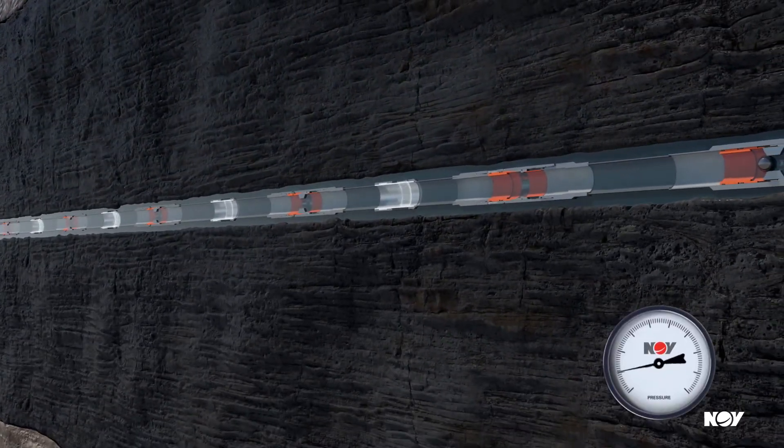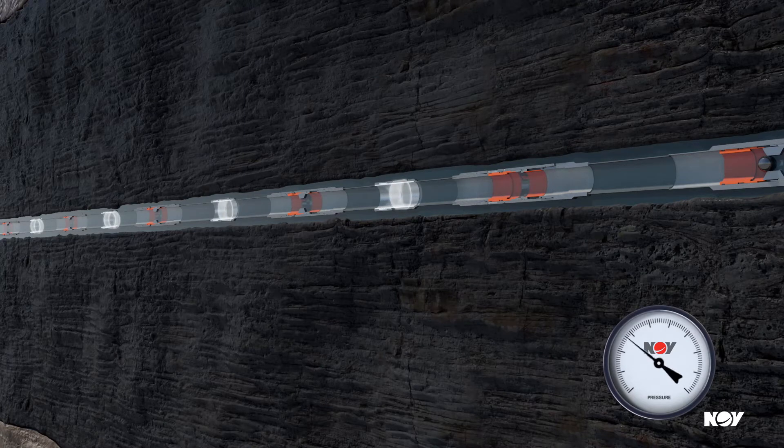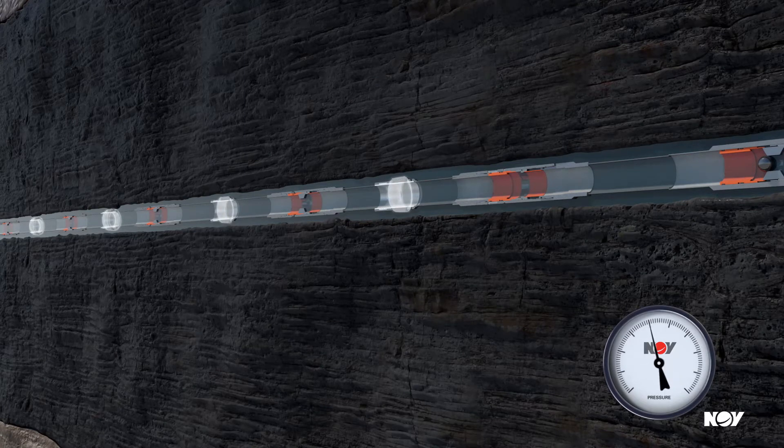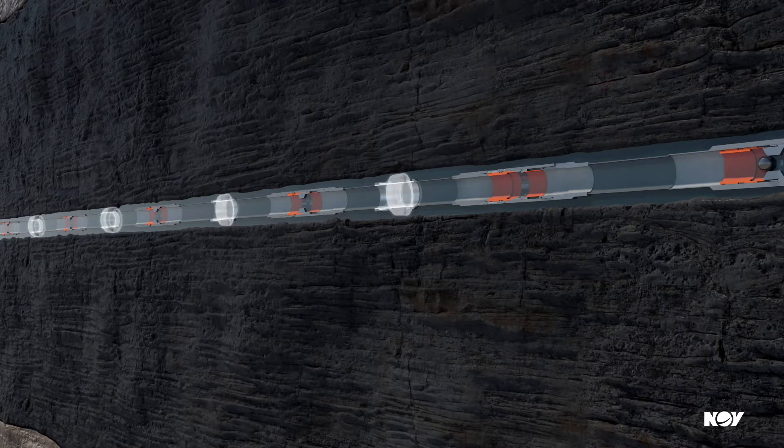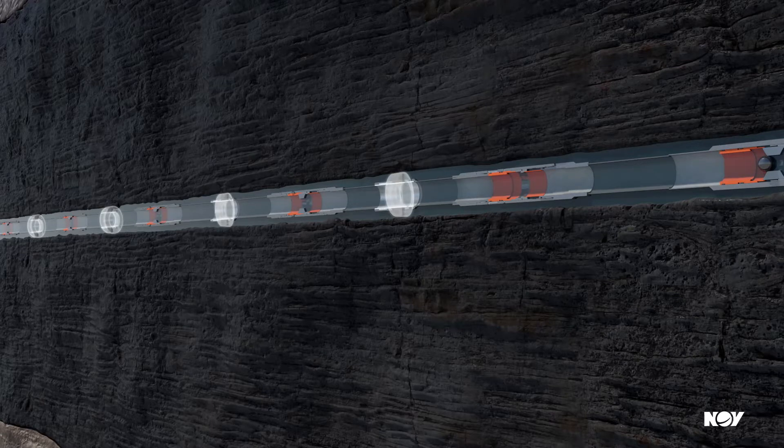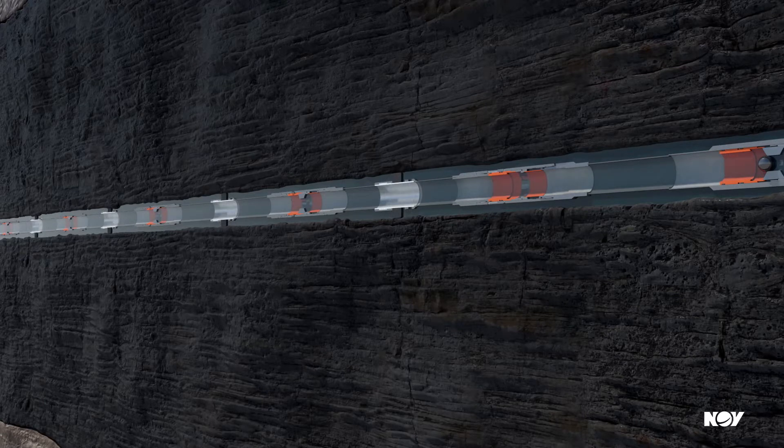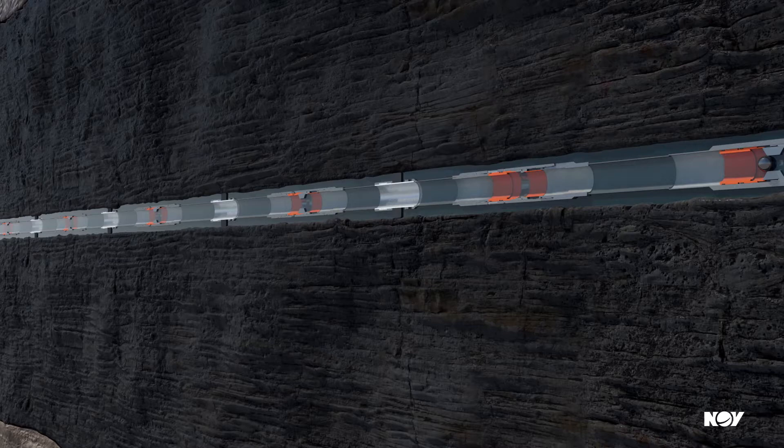Pressure is applied to set the hydromechanical packers and the liner top packer. The running tool can then be released from the liner if required. If swell packers are installed in the system, the appropriate time will need to be given for isolation to occur.